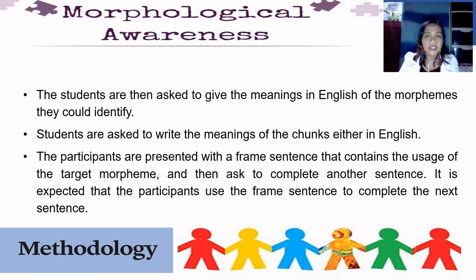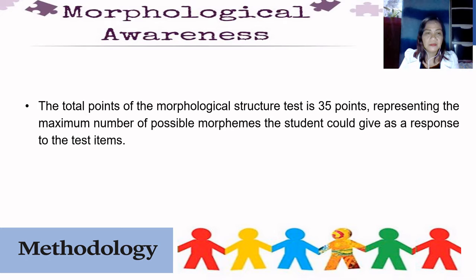The students are then asked to give the meanings in English of the morphemes they could identify. The participants are presented with a framed sentence that contains the usage of the target morpheme and then asked to complete another sentence. It is expected that the participants use the framed sentence to complete the next sentence. Each morpheme in a test item receives one point. The total points of the morphological structure test is 35 points, representing the maximum number of possible morphemes the student could give as a response to the test items.